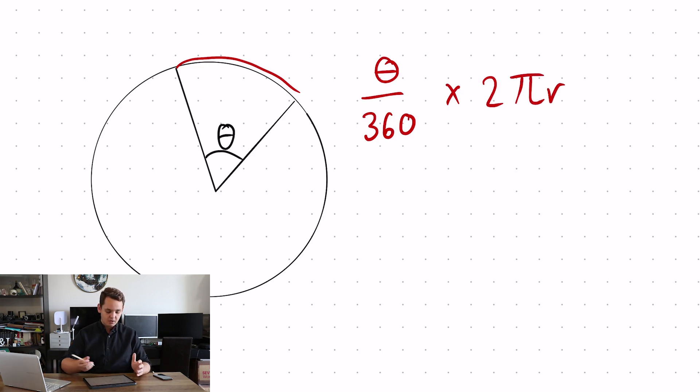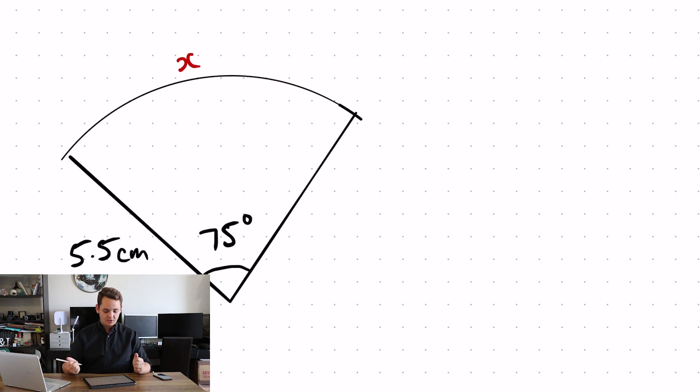For instance, looking at this arc here, I know my radius of 5.5 centimeters and I know my angle is 75 degrees.